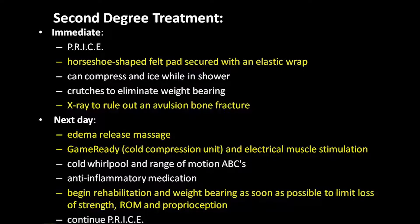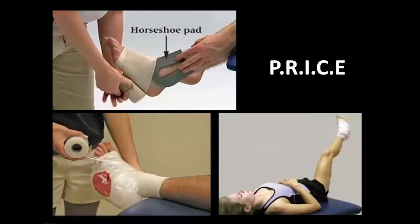It is important to begin weight bearing as soon as possible to limit loss of strength, range of motion, and proprioception. These images demonstrate the use of the horseshoe felt pad with the compression wrap, ice, and elevation.